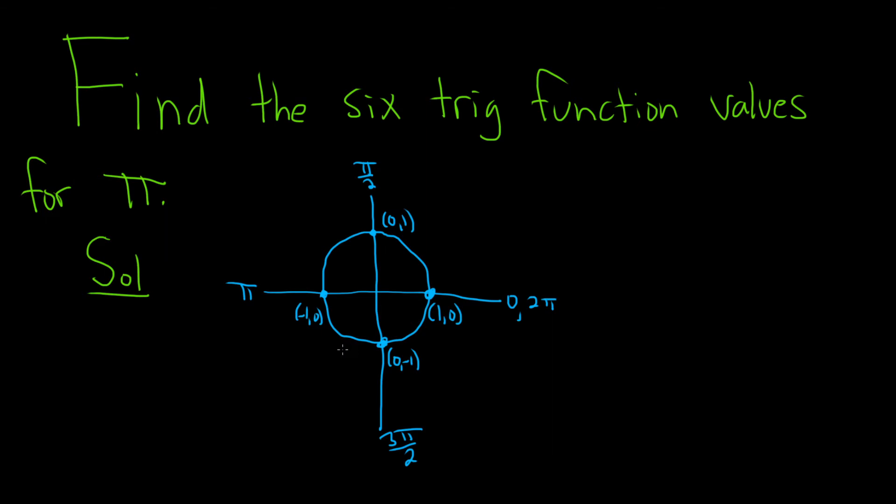All right, we want these six trig function values for pi. So on the unit circle, every ordered pair has the form cosine, sine. So if I pick a point on the circle, the x-coordinate is the cosine function, and the y-coordinate is the sine function.